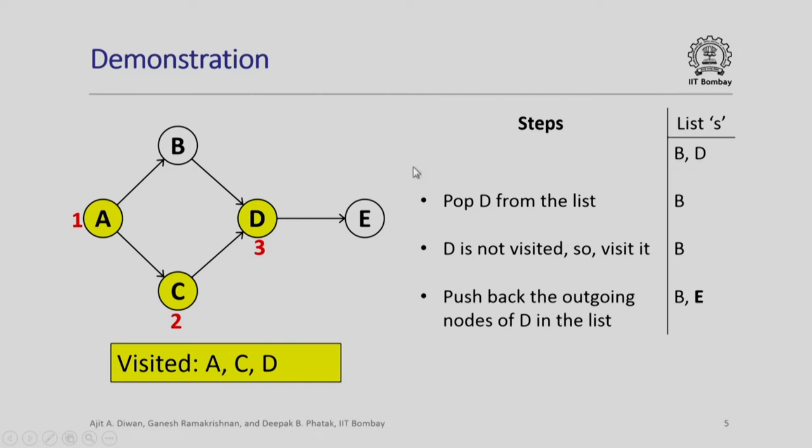We continue. We now pop the next element from the list which happens to be D. When D is popped, list contains only B. Since D is not visited, we visit it. And we push back all outgoing edges from D which happens to be only one edge to E. Therefore, the outgoing node E is now pushed onto the list. The list now contains B and E.